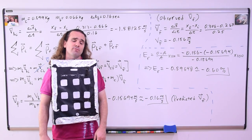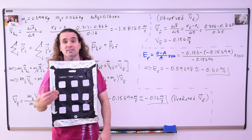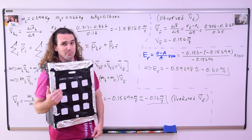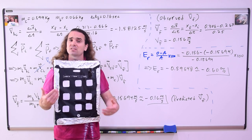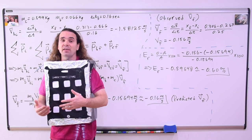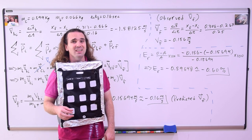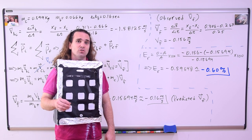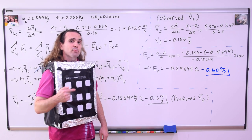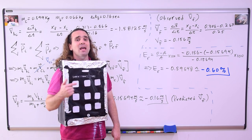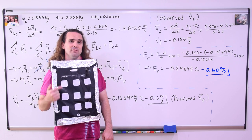Using the relative error formula, or the observed value minus the accepted value divided by the accepted value times 100, and substituting in our predicted value for the accepted value, we get an error of, with two significant digits, negative 0.60% between the predicted final velocity and the measured final velocity.